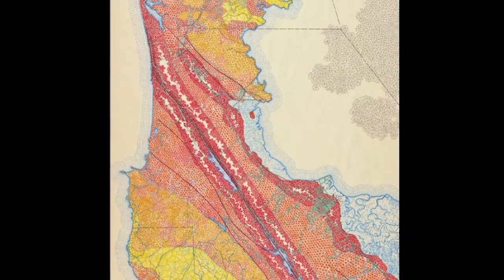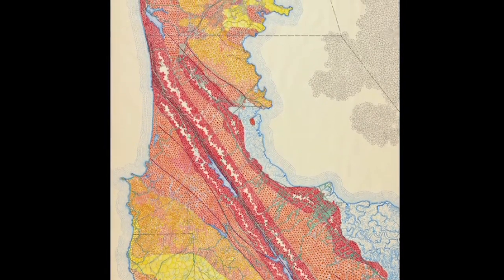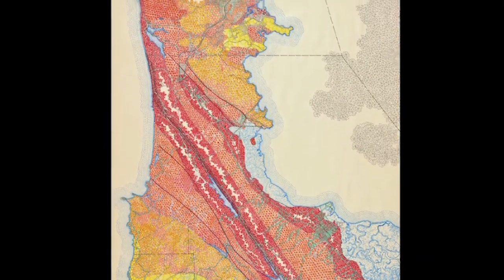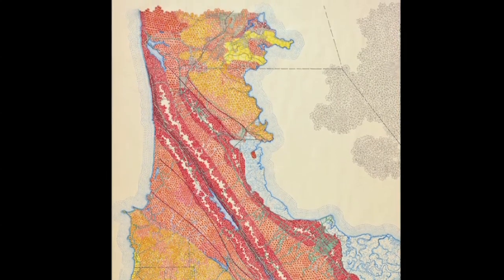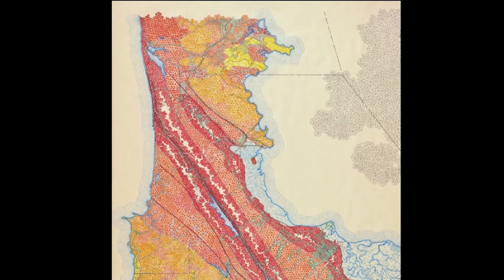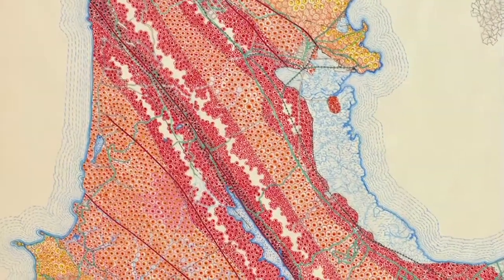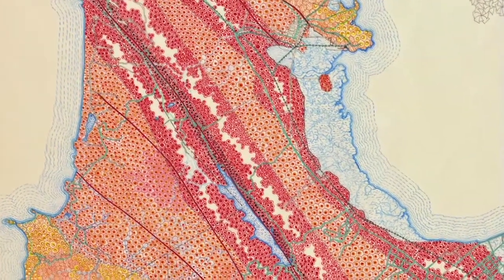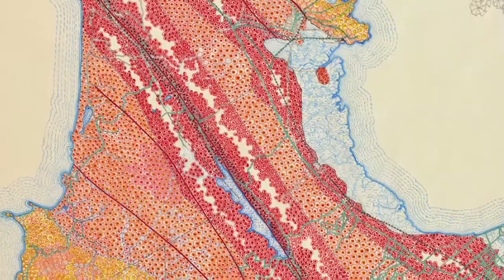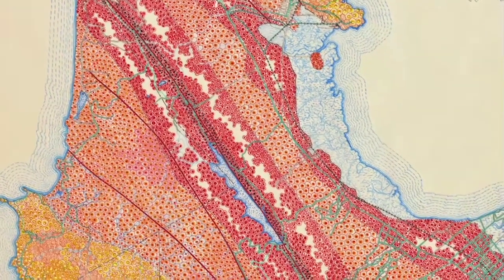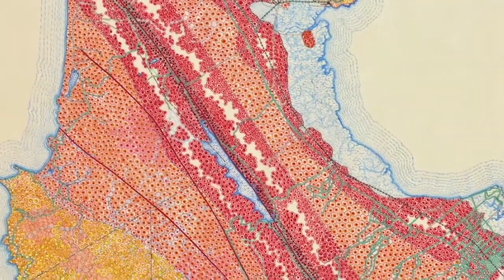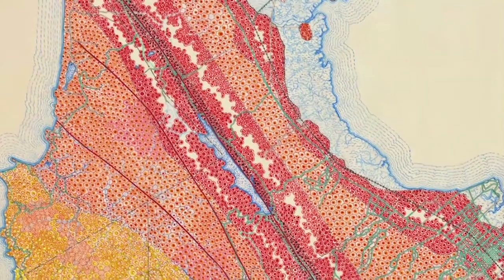The 1895 map shows the distribution of the intensities of the earthquake in different scales, so it actually shows all the fault lines. It's going from lighter to darker and darker, and the darkest red would be where the earthquake will be the most intense, most extreme.